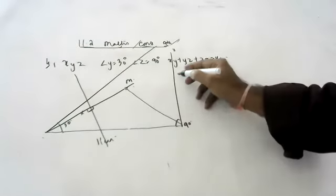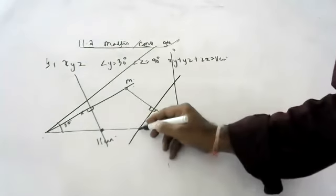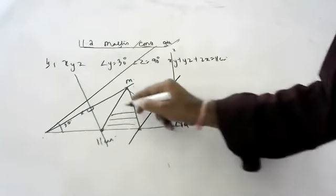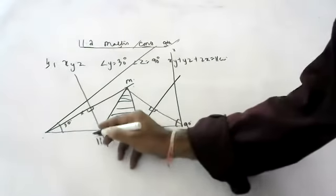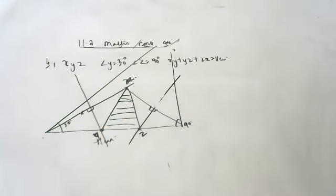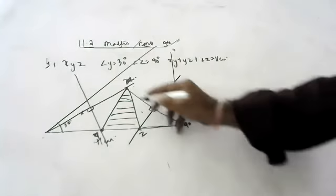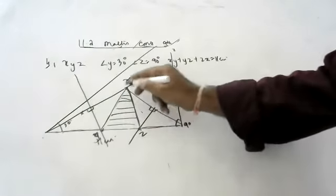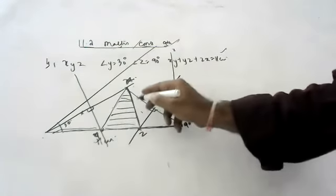For this side also draw a perpendicular bisector. Wherever they are joining, join this — this is the required triangle XYZ. You may be asking how — these both triangles are congruent. By CPCT, whatever is this side, that is this side. This plus this plus this is 11, and this plus this plus this is also 11.